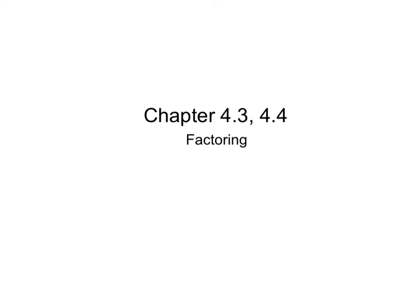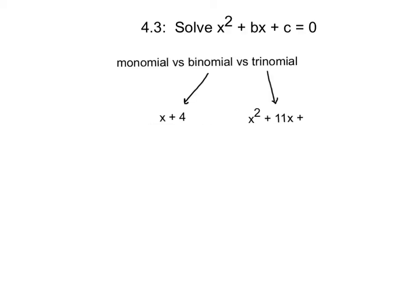We're going to be covering chapters 4.3 and 4.4, and these are both focused on factoring. We're going to be solving x squared plus bx plus c — for example, x squared plus 2x plus 3 — anything in which b and c are constants that are not zero.